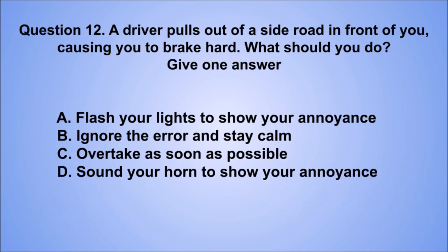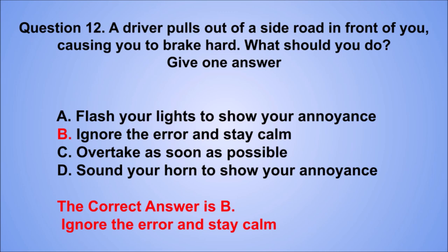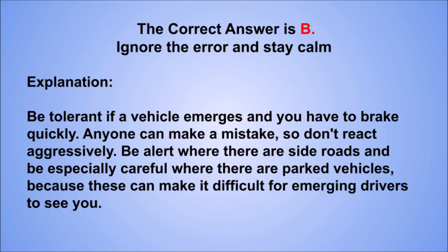Question 12. A driver pulls out of a side road in front of you, causing you to brake hard. What should you do? Give one answer. A. Flash your lights to show your annoyance. B. Ignore the error and stay calm. C. Overtake as soon as possible. D. Sound your horn to show your annoyance. The correct answer is B, ignore the error and stay calm. Be tolerant if a vehicle emerges and you have to brake quickly. Anyone can make a mistake, so don't react aggressively. Be alert where there are side roads and be especially careful where there are parked vehicles, because these can make it difficult for emerging drivers to see you.